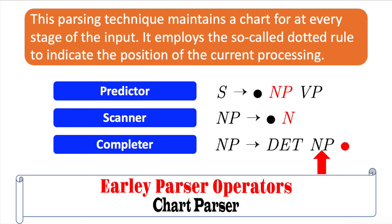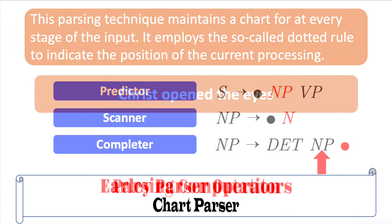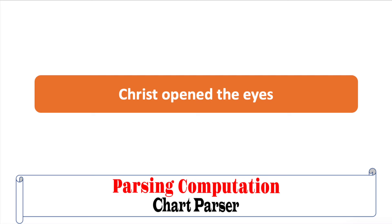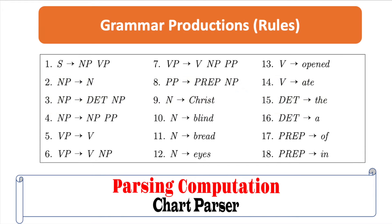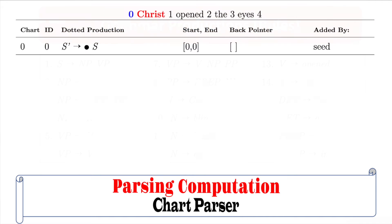Let's demonstrate this Earley parsing algorithm by way of example now. Suppose we are going to parse the sentence 'Christ opened the eyes' using the simple grammar shown in the screen. The first thing to do is to create an extra production S-prime derives S, and this becomes its seed. The parsing will start from here, and let's make a chart with the state number as its chart number, that is chart zero. Please note that the number under the chart end column indicates the starting chart number and the ending chart number respectively.